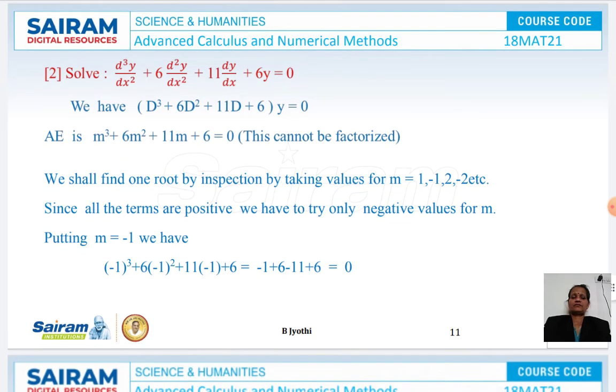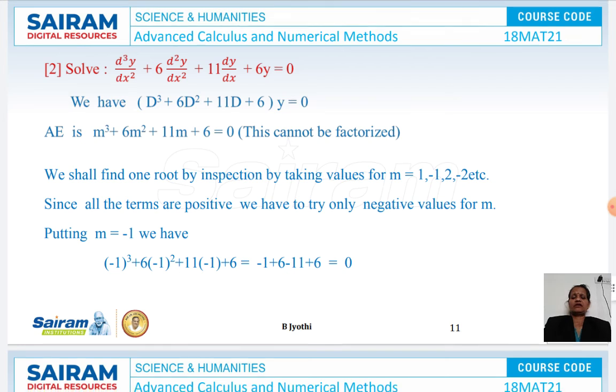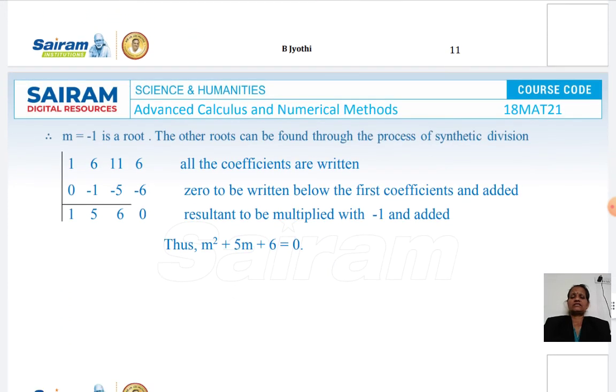Next question: d³y/dx³ + 6d²y/dx² + 11dy/dx + 6y = 0. Now, this cannot be factorized easily. By inspection method, we try values for m and find that -1 is a root. Let us apply synthetic division.